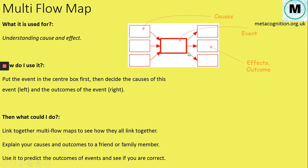And explain why you think the things on the right are outcomes, and it will help you make sure that you are correct. You can also use it to predict events. So you could put an event in here, so it might be a science experiment, you could put down the causes, why you think something's going to happen.